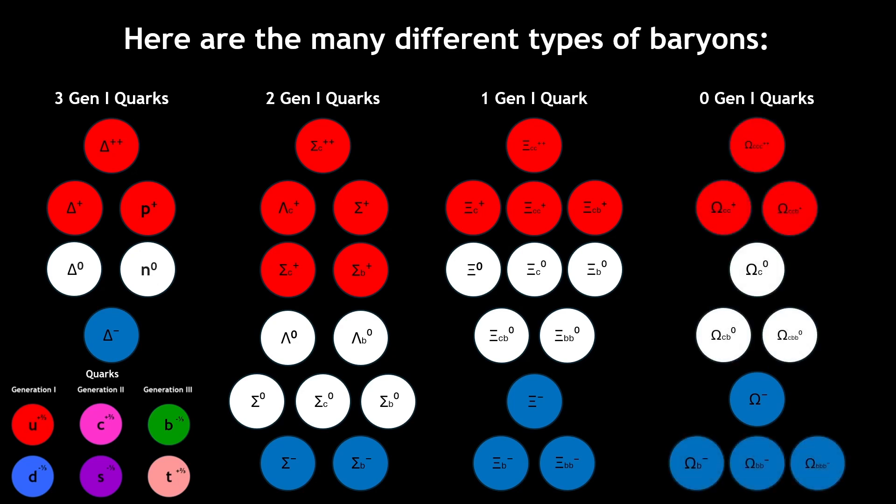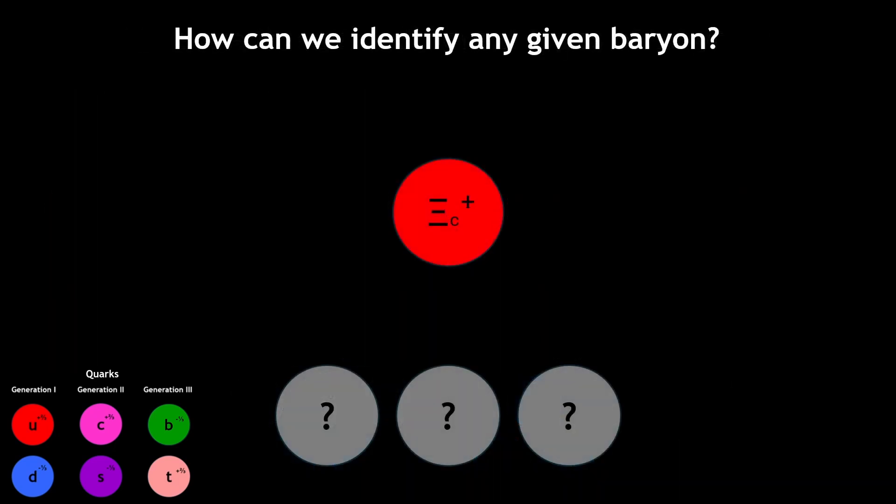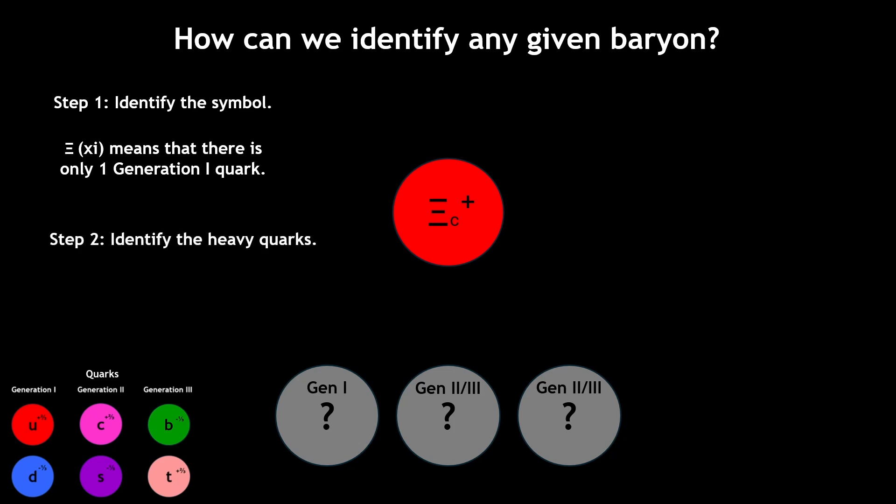So in order to identify any given baryon's quark composition, we can use the following process. First, we can identify the symbol and determine how many generation 1 quarks are in the baryon. Then, we can identify the heavy quarks noted by the subscripts.